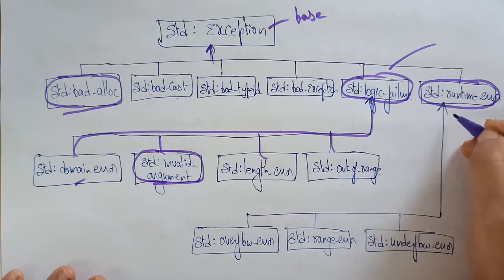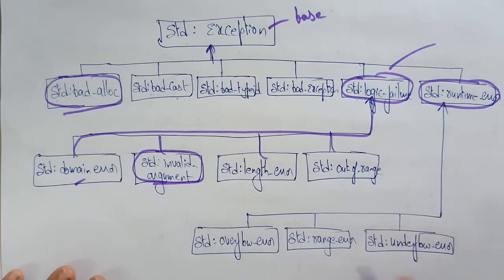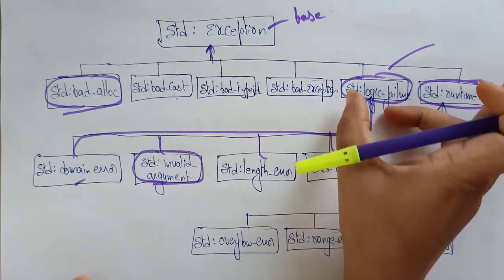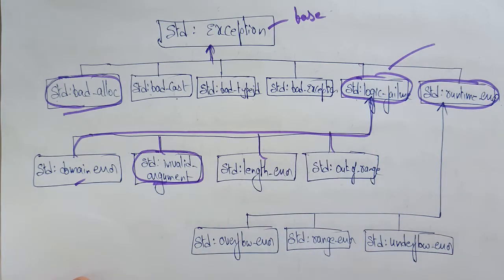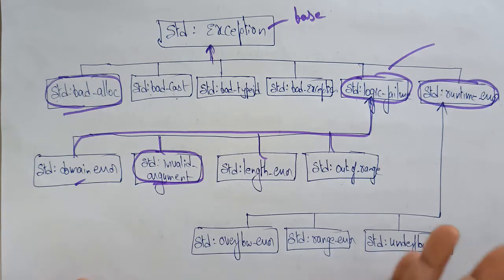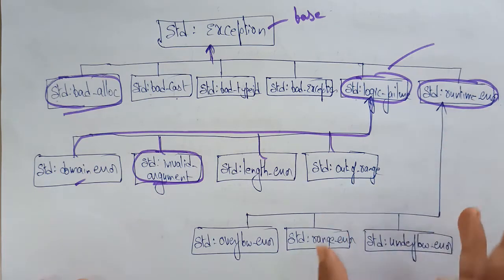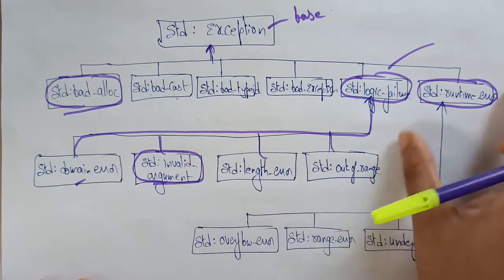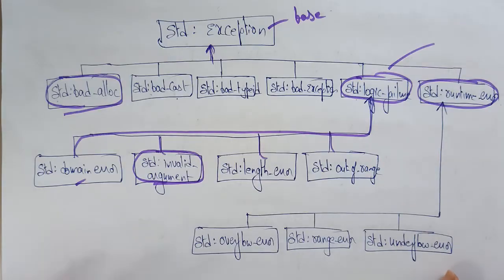std::runtime_error covers: overflow error, underflow error, and range error — if it is crossing the range, those all come under runtime error. Logic errors can be detected at the time of writing the program, before compiling — you can identify them by reading the code. But runtime errors cannot be identified while writing the program; they can only occur and be detected at runtime.